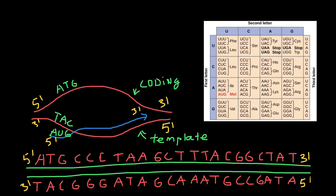For example, let's imagine that here we have the sequence A, A, A on the messenger RNA. On the template strand of the DNA, we are going to have the corresponding sequence T, T, T — thymine, thymine, thymine. And on the coding strand of the DNA, we are going to have the sequence A, A, A — the same as in messenger RNA. That's why we call this strand of the DNA the coding strand.